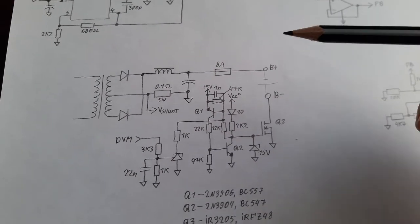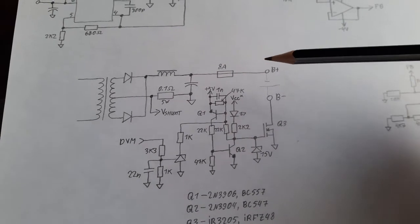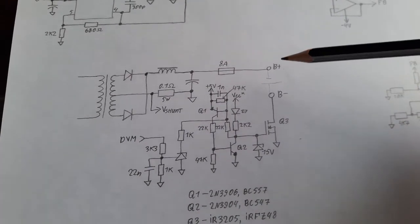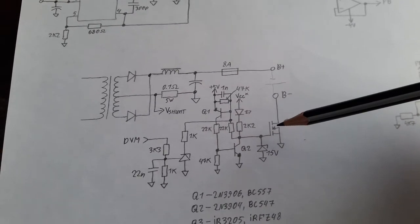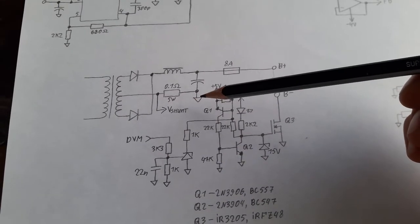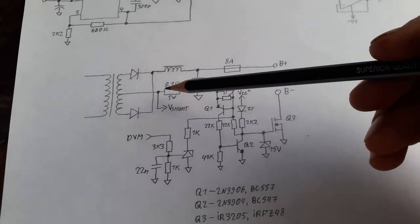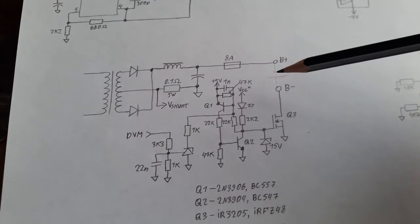But what happens if you do that? There will be huge current flowing. The current of the battery is gonna go through this turned on MOSFET, into the ground, into here, through the resistor, through the diodes and back into the battery.